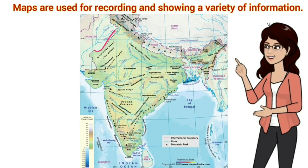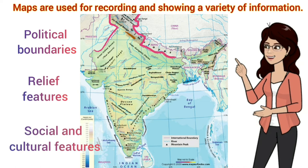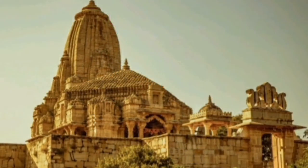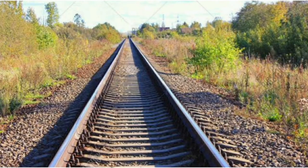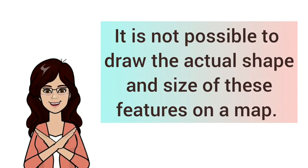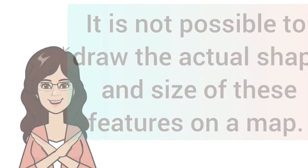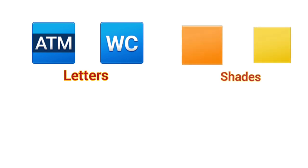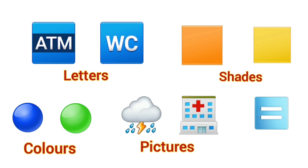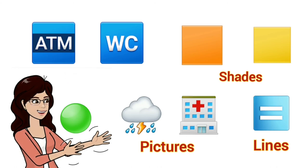Maps are used for recording and showing a variety of information, such as political boundaries, relief features, and social and cultural features like temples, buildings, and railway lines. But it is not possible to draw the actual shape and size of these features on a map. So they are shown by using certain letters, shades, colors, pictures, and lines. These signs and symbols give us a lot of information in a limited space, and with the use of these symbols, maps can be drawn easily and are simple to read.